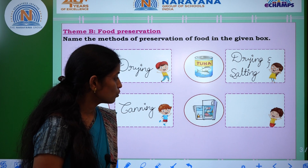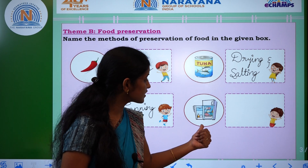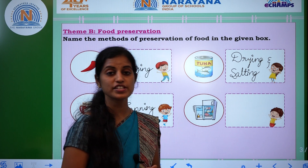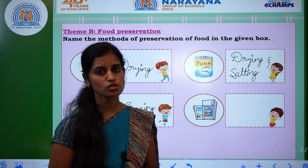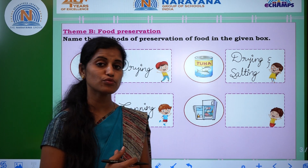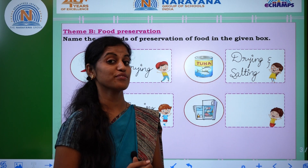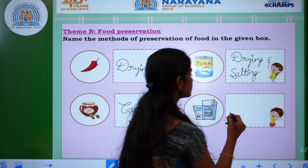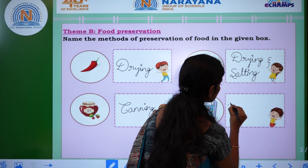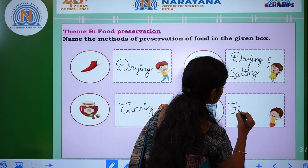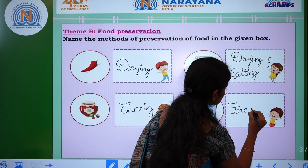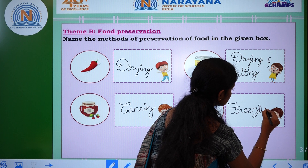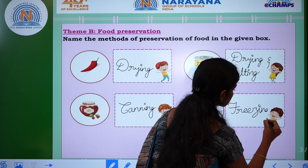See the last one. We are storing food items in a refrigerator. In our home also we keep some food items in the refrigerator. The process is called freezing — F-R-E-E-Z-I-N-G. Freezing.